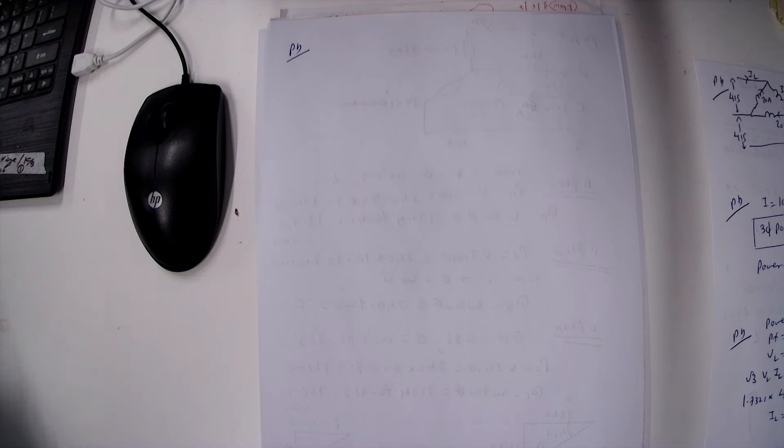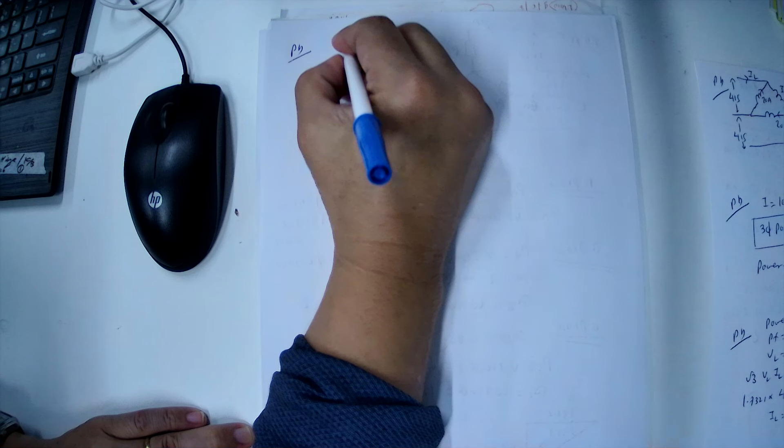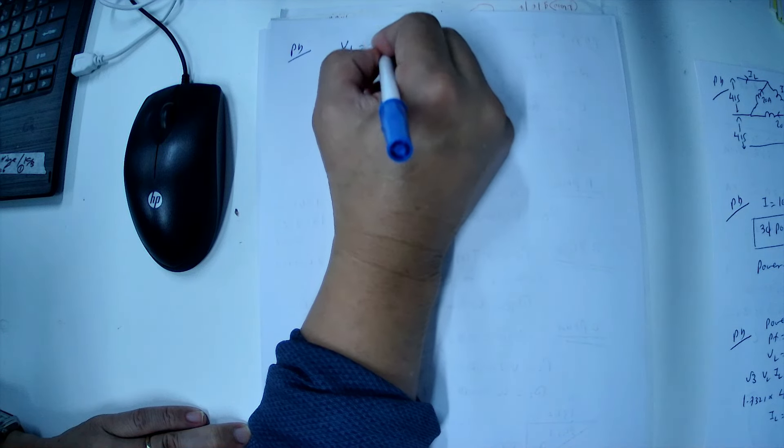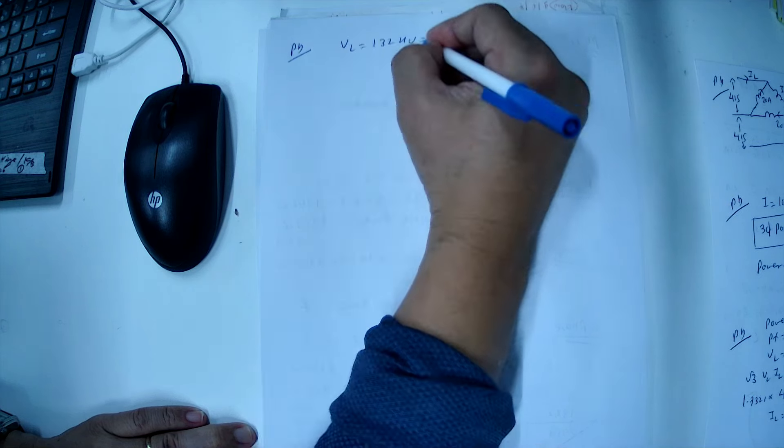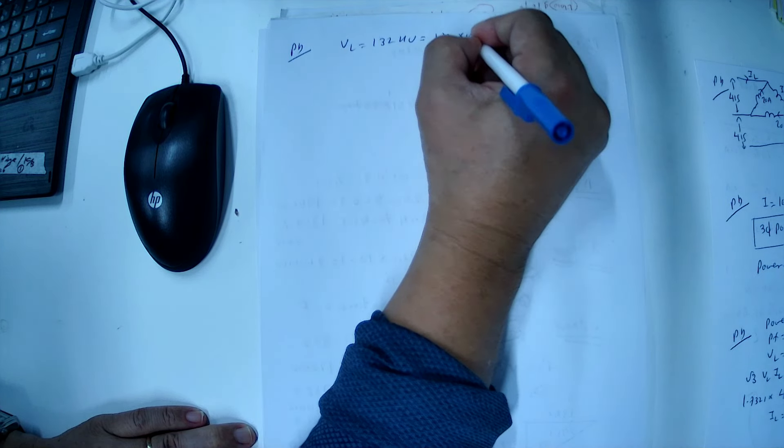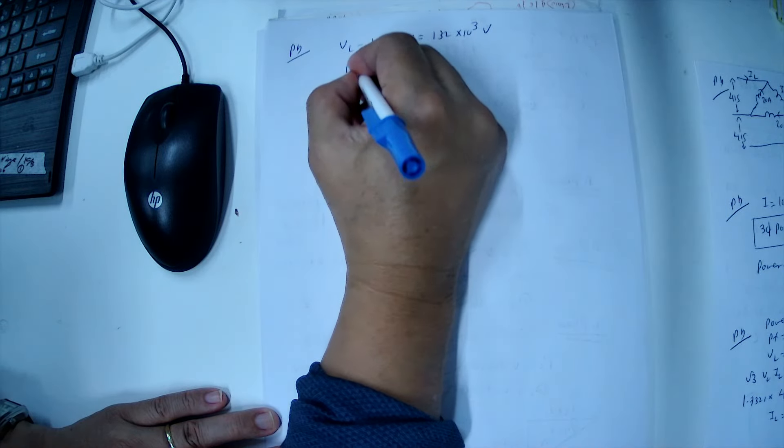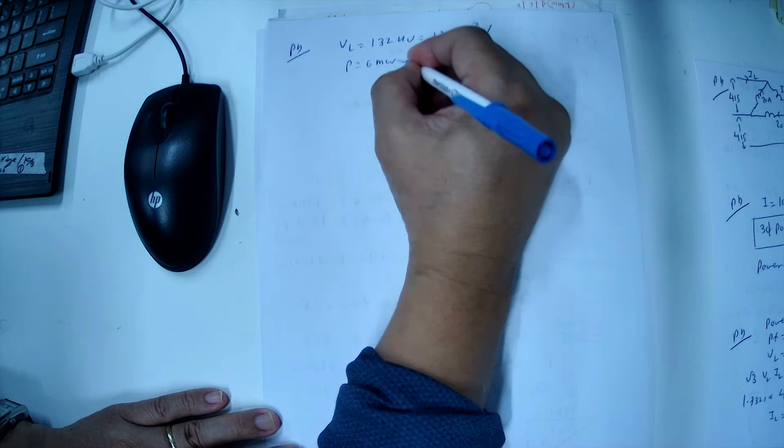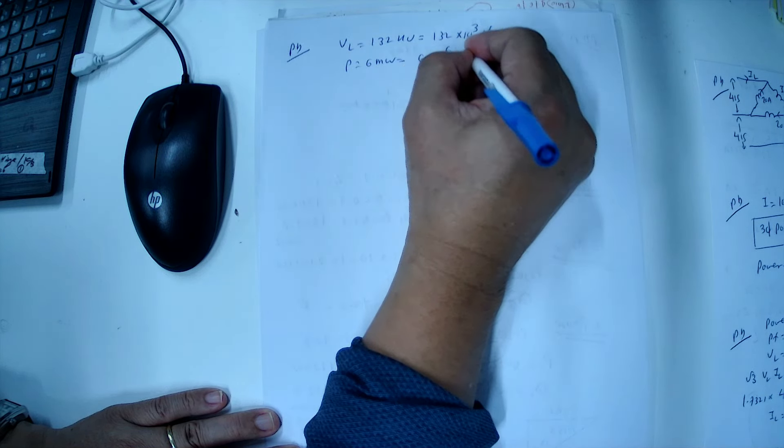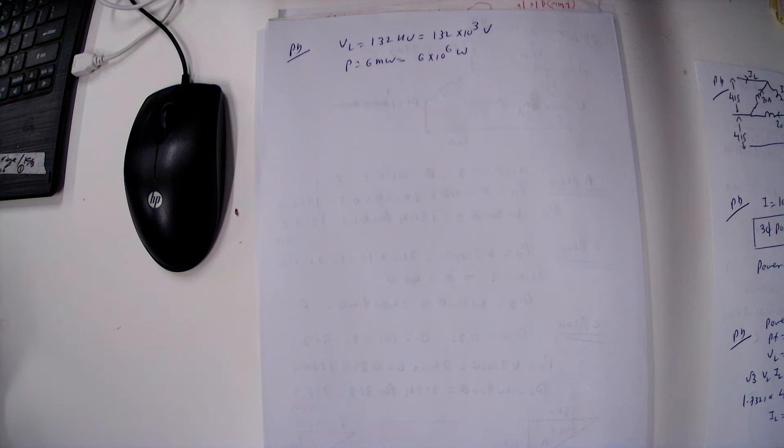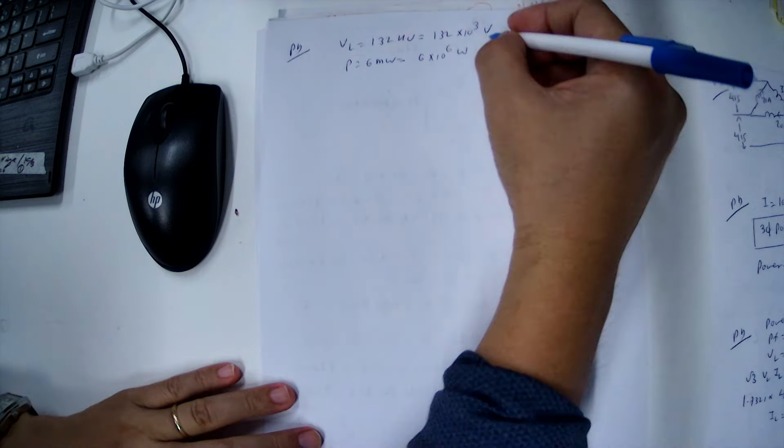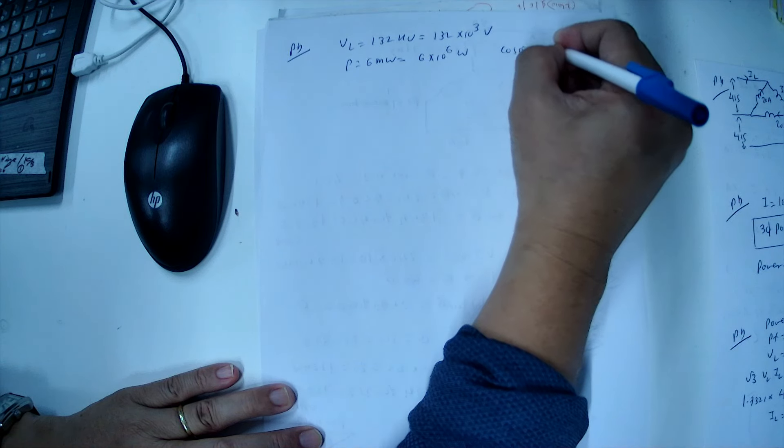So in this case our supply voltage VL is given as 132 kV, or 132 into 10 power 3 volts. And power equals 6 megawatts, or 6 into 10 power 6 watts. And cos theta is 0.437.